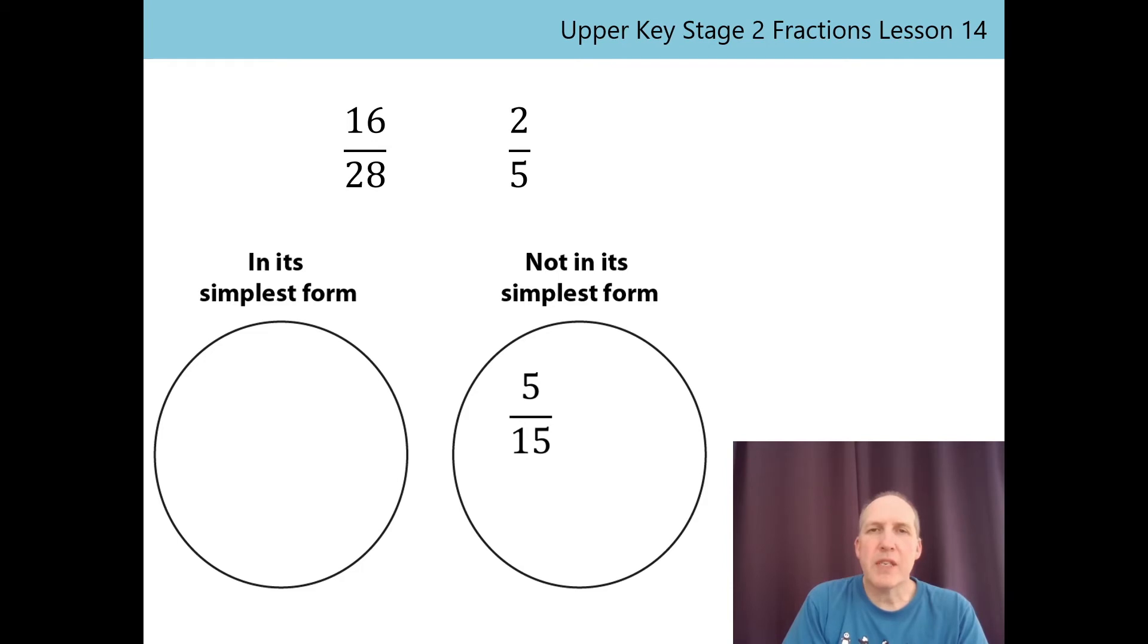The next one was 16/28. A bit trickier. 16 isn't a factor of 28, but they do have some common factors: 2, 1 obviously, and 4. 4 is going to be the highest common factor, so 16/28 is going to go into the not in its simplest form circle.